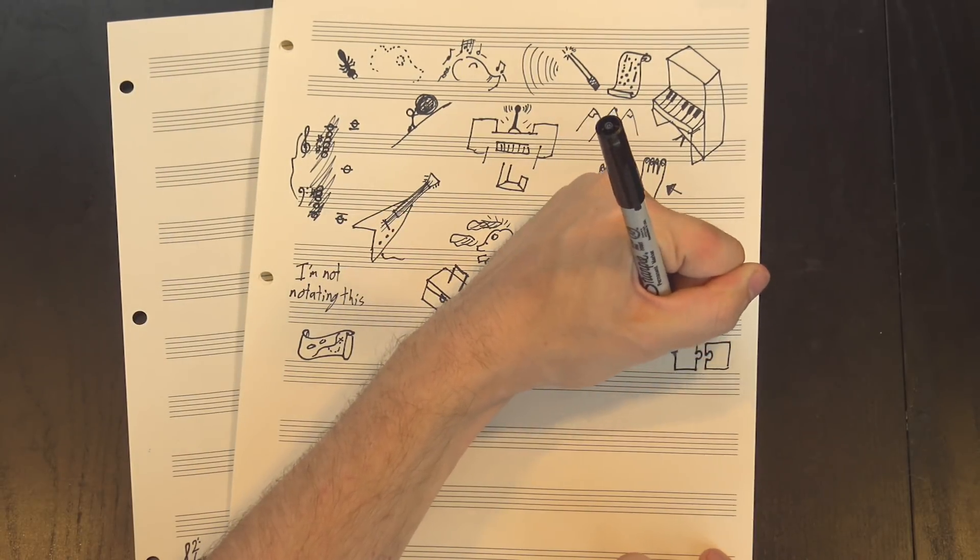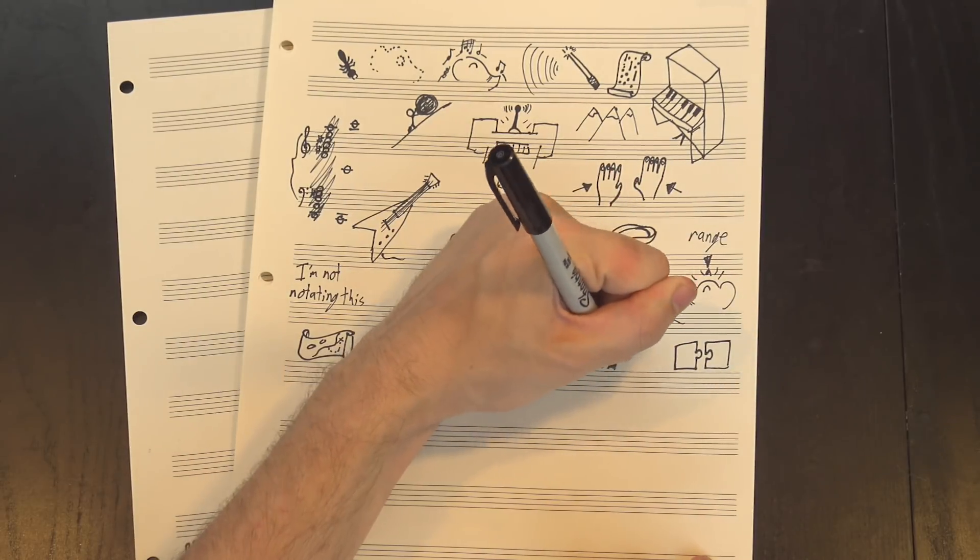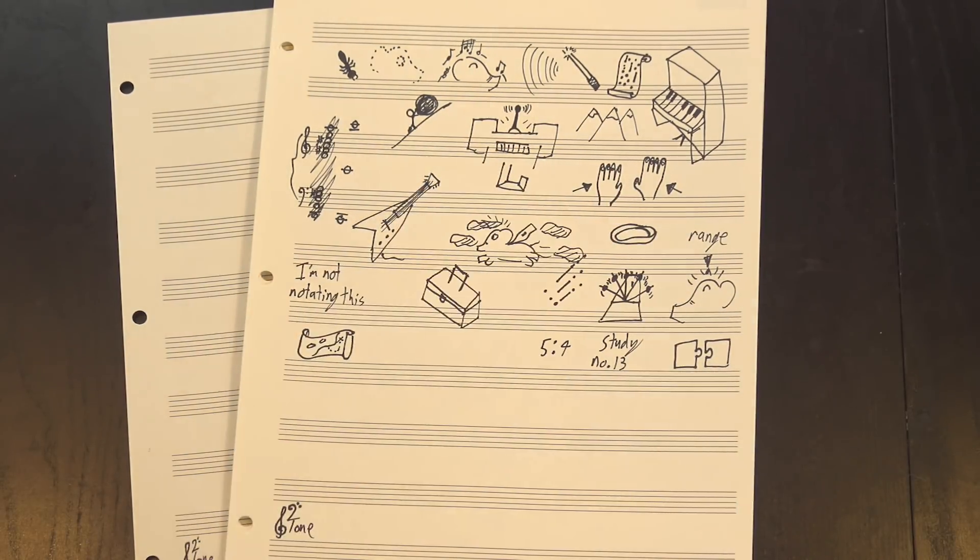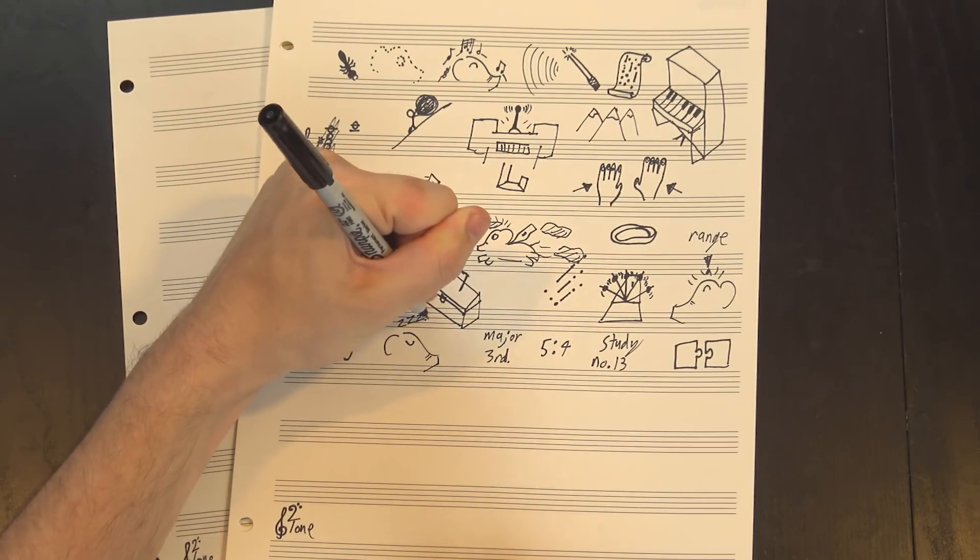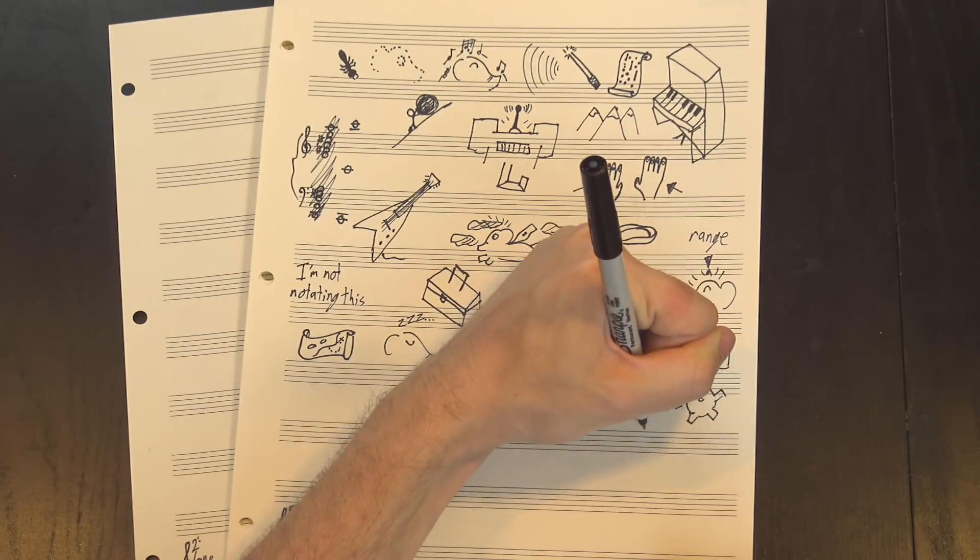He started simple. Many of his early works stick to fairly straightforward ratios. For instance, his study number 13 is based on a ratio of 5 to 4, effectively a major third. But Nancarrow quickly tired of those sorts of simplistic designs and set out to do more and more complicated things.